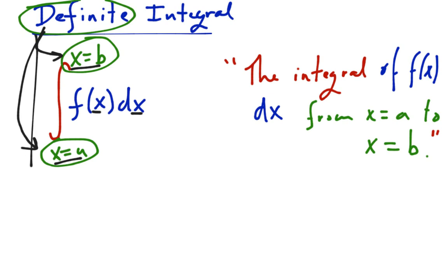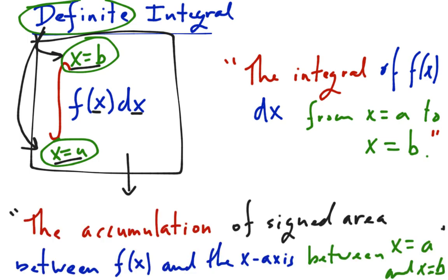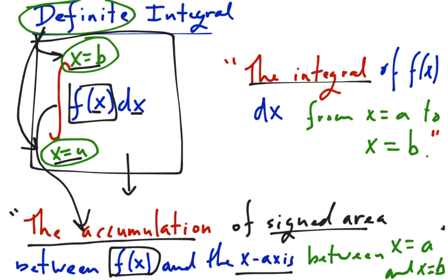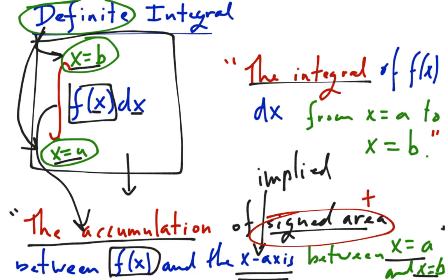The next really important thing is that this expression has meaning, and the meaning of this expression is the following. This integral thing means the accumulation, and I sort of did this color coded, so like this symbol means accumulation and it also means integral. So the symbol means the accumulation of signed area between f of x, which is the function, and the x-axis. This is always implied whenever you're doing an integral, and then again we're going between x equals a and x equals b. Here's a great example to figure out what this all means.